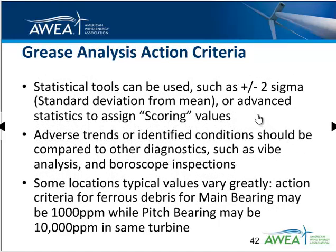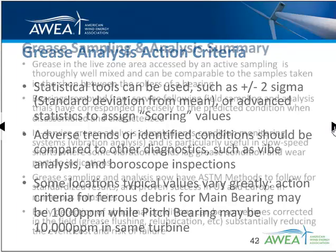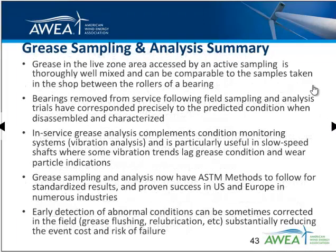Statistical tools such as plus or minus two sigma or advanced statistics can be used to assign scoring values to know which components warrant advanced grease analysis or maintenance targeting. It's important to know that different locations might vary significantly — a main bearing where the criteria for action is 1,000 PPM, while a pitch bearing may be 10,000 in the same turbine. This has to do with the rate of replenishment of grease and the typical levels of wear generated for these locations.